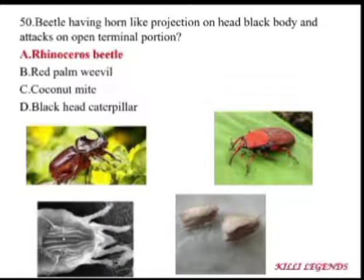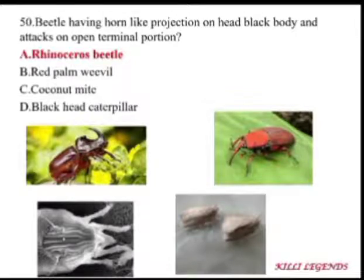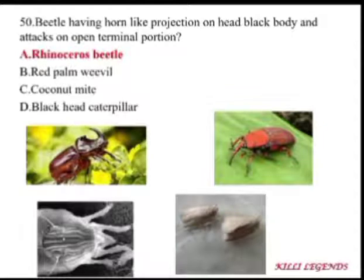Beetles with horn-like projections on the head, black body, attacking the open terminal portion of coconut are rhinoceros beetles. The red palm weevil is one of the most dangerous pests of coconut — it pierces into the stem and feeds internally, laying eggs in the trunk. The infestation is generally not noticed until the tree suddenly falls. Management includes cutting and burning infested trees and root drenching with monocrotophos.